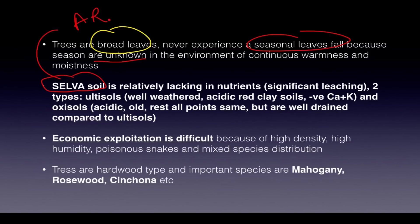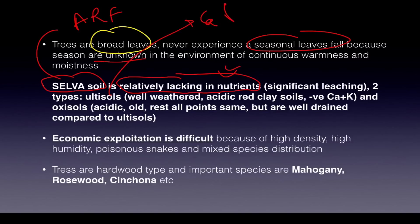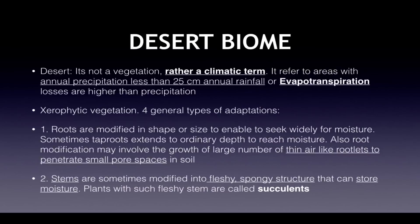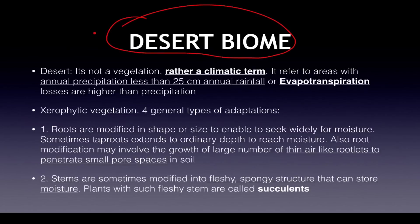'Selva' is the term for the Amazon rainforest in Brazil and South America. Surprisingly, the soil is lacking in nutrients due to extensive leaching. There are two types of selva soils: ultisol — a well-weathered, acidic, radical soil lacking calcium and potassium — and oxisol, which is very well drained. Economic exploitation is difficult due to high density, poisonous snakes, difficult animals, and non-repetitive species. Important tree species include mahogany, rosewood, and cinchona — cinchona is used for treating various diseases.